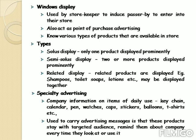The next type is window displays — an important device used by the storekeeper to induce passersby to enter the store. It acts as a point of purchase advertising and is extremely important to attract the attention of consumers, allowing passersby to know about the various types of products available in the store. There are some types of window displays: the first is sole display, where only one product is displayed prominently; the next is semi-sole display, where two or more items are displayed prominently; and related display, where related products are displayed together — for example, in grocery shops, shampoo, toilet soaps, and lotions are displayed altogether.